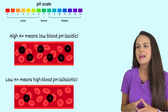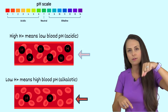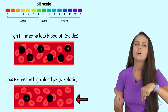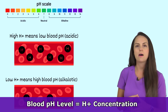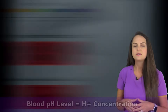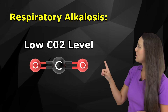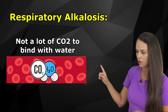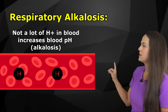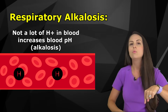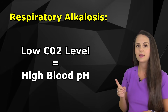Hydrogen ions are acidic. If you have too many hydrogen ions, your blood pH is going to be low — acidic. If you don't have a lot of hydrogen ions, your blood pH is going to be alkalotic — it's going to go up. Blood pH is how we measure hydrogen ion concentration. With respiratory alkalosis, we have a low carbon dioxide level, so we don't have a lot of CO2 binding with water, we're not getting the formation of much carbonic acid, and therefore not getting a lot of hydrogen ions. Dropping our hydrogen ions increases our blood pH, giving us alkalosis.